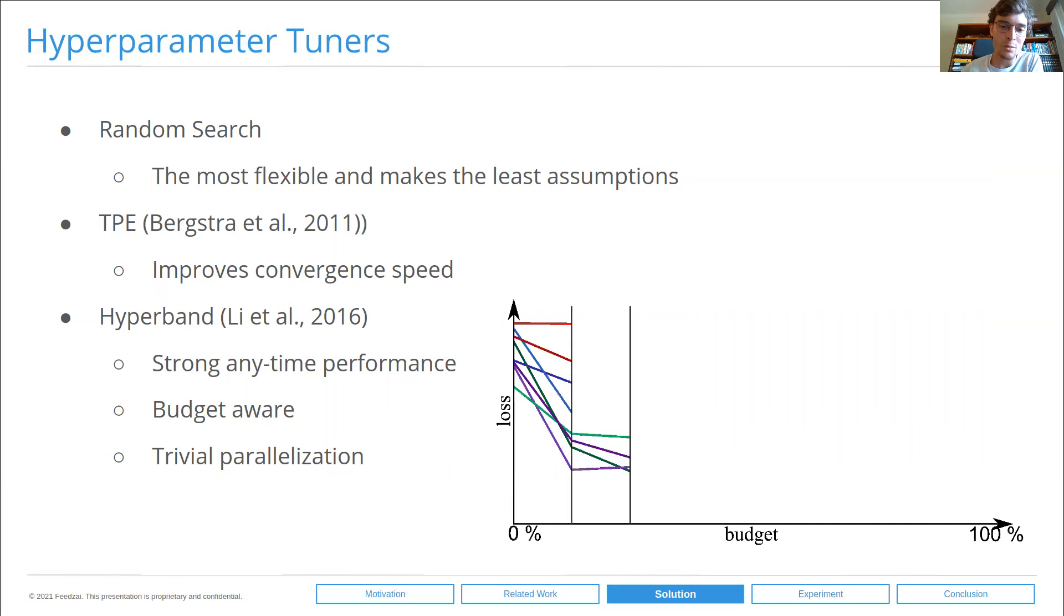Hyperband is actually built on another tuner, which is successive halving, and both of these tuners rely on a simple but powerful hypothesis, which is relying on low fidelity estimates of a model's performance. They essentially randomly sample n hyperparameter configurations, train them on a fraction of the total budget, in this case 12.5%, and use this as an estimate of that model's performance. They will discard the worst half and double the budget for the remaining ones. Discard the worst half, double the budget until a single configuration remains.